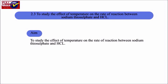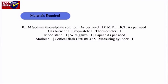Experiment 2.3 Aim: To study the effect of temperature on the rate of reaction between sodium thiosulphate and HCl. Materials required: 0.1 M sodium thiosulphate solution, 1.0 M diluted HCl solution, gas burner, stopwatch, thermometer, a tripod stand, wire gauze, paper, a marker, conical flask of 250 ml, and measuring cylinder.